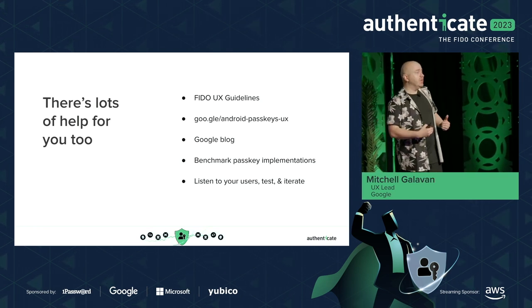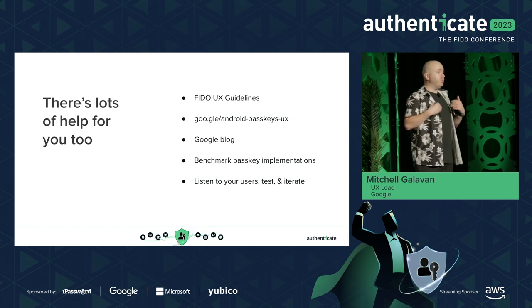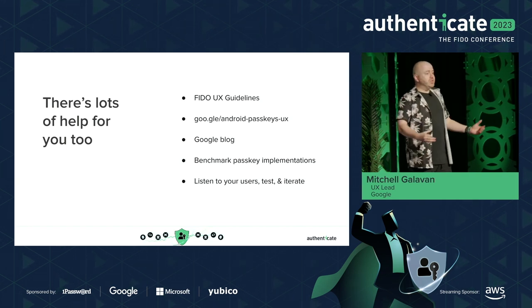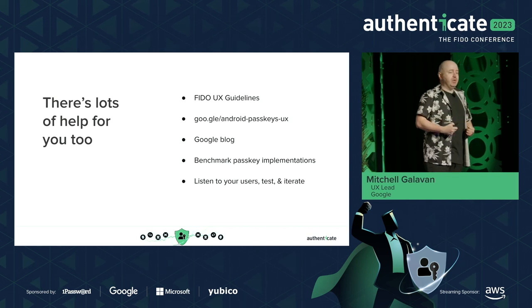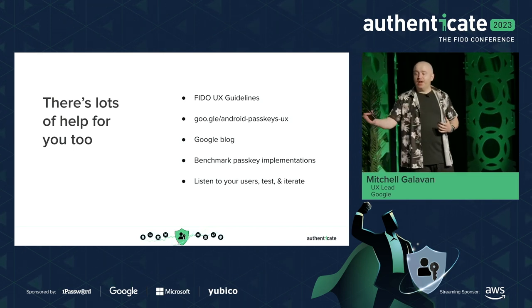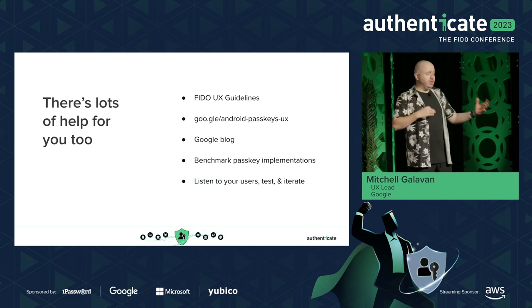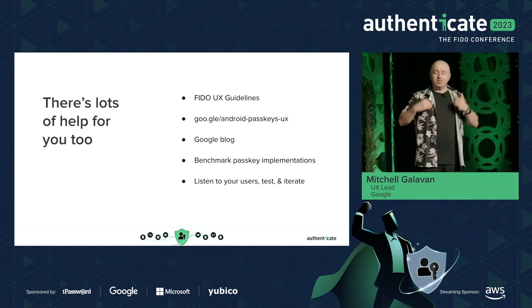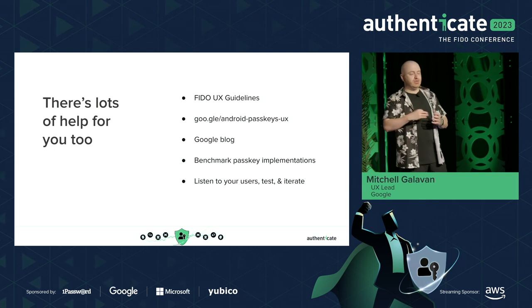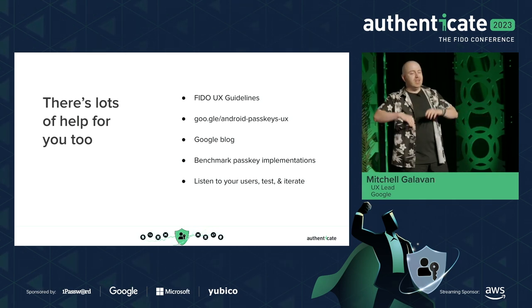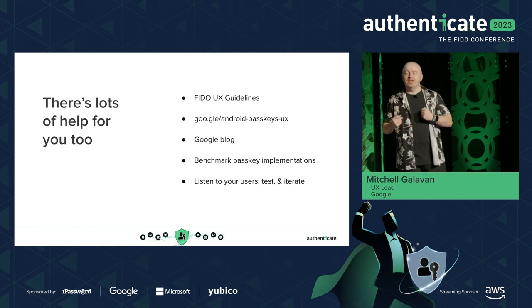It can be really effective to benchmark other passkey implementations — as a user, go through those flows with a fresh mind and a fresh set of eyes to learn what's working well and what's not. And Court and I really believe in listening to your users: create that feedback loop, give them a way to reach out to you, give them a way to express their voices, and test and iterate. It's not always easy to get it right the first time — give yourself the runway to experiment and A/B test to find what works for your users.